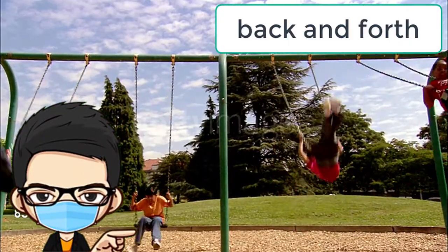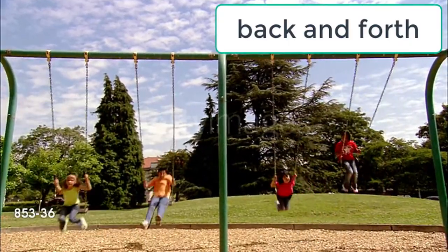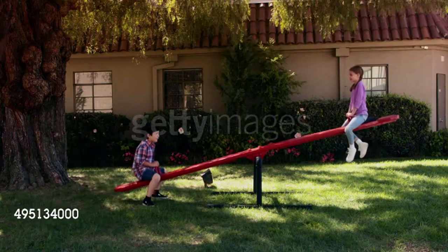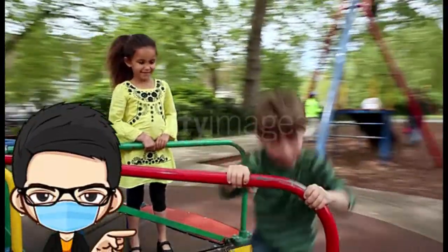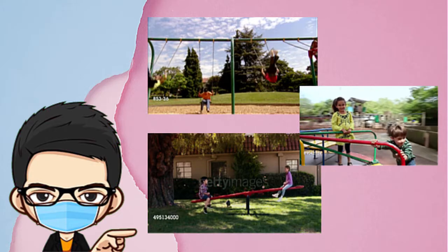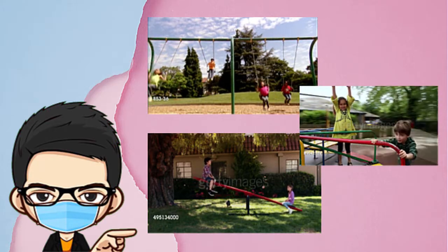The swing goes back and forth. The seesaw goes up and down. Meanwhile, the merry-go-round goes round in a circle. You see, there are so many ways in which things move.